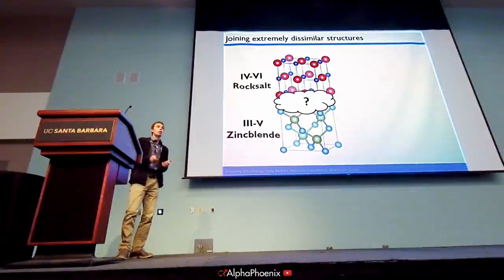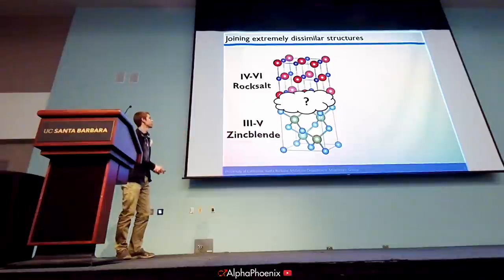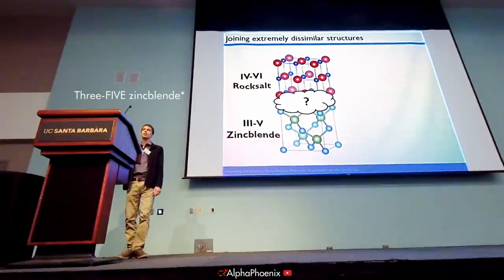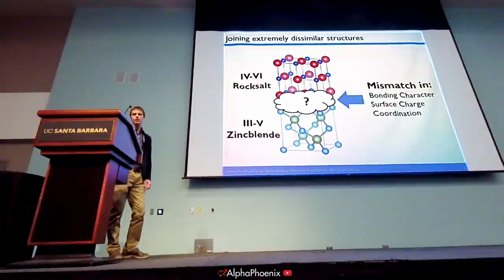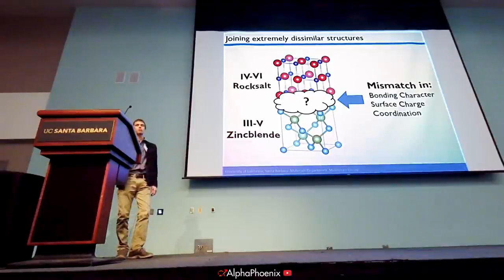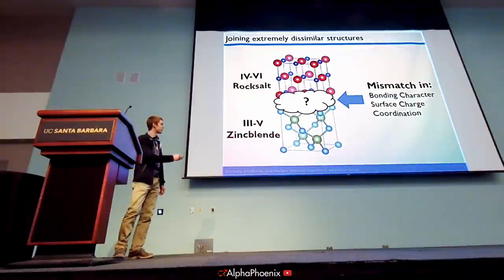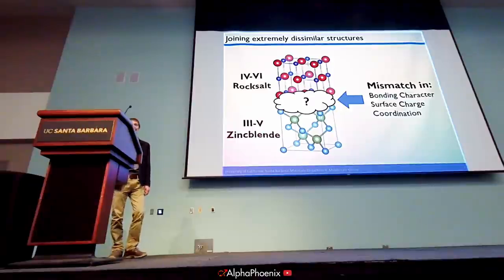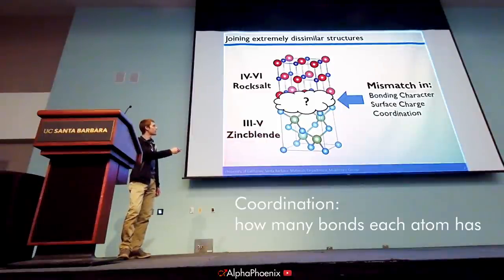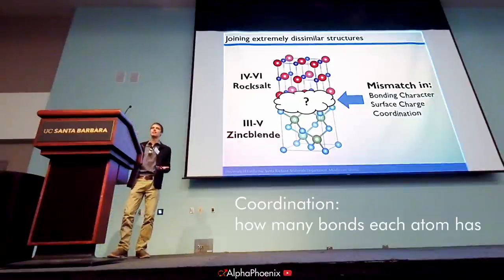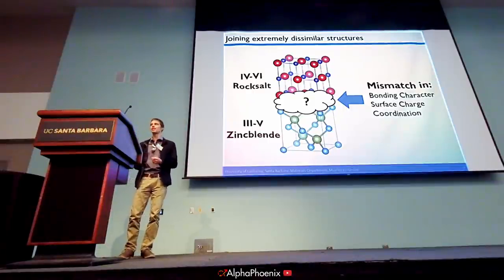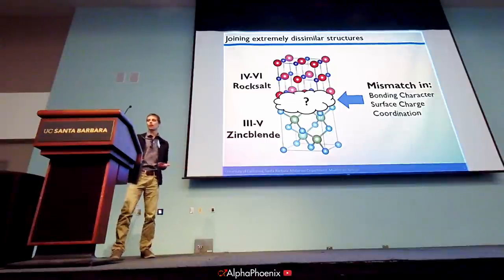Today I'm going to be talking about one particular interface between two crystalline materials: what happens when you try to grow a 4-6 rock salt on top of a 3-5 zinc blend material. These two material systems don't like each other at all. There's a distinct difference in bonding character — we go from covalent bonding to a sort of mixed bonding. There's also a change in surface charge: the zinc blend (001) surface is charged, and the rock salt (001) surface is neutral. And I think the most visual problem is a change in coordination — going from a tetrahedrally bonded material to an octahedrally bonded material, meaning at that interface you have to have at least one layer of extraordinarily unhappy atoms to reconcile that change in coordination.